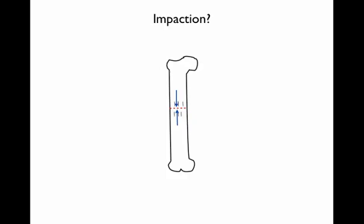Finally, impaction. If you have a complete fracture and then, due to weight-bearing or other reasons, the two ends of bone come together and impact into each other, this can lead to shortening. The way to detect this on x-ray is by seeing increased opacification over the area where the two pieces of bone are overlying each other.